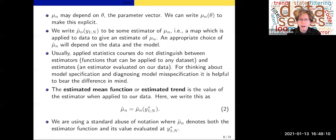When we write μ̂n(y), we're distinguishing between an estimator, which is a function that can be applied to any data set, and an estimate, which is an estimator evaluated on our own data. For thinking about model misspecification and diagnosing model misspecification, it's helpful to bear the differences in mind. The estimated mean function, equivalently the estimated trend, is the value of the estimator applied to our data. We write μ̂n; if we don't give it an argument, the argument is the data, so μ̂n is an estimate and μ̂n(y) is an estimator. That's a small abuse of notation, but I think one we can live with.